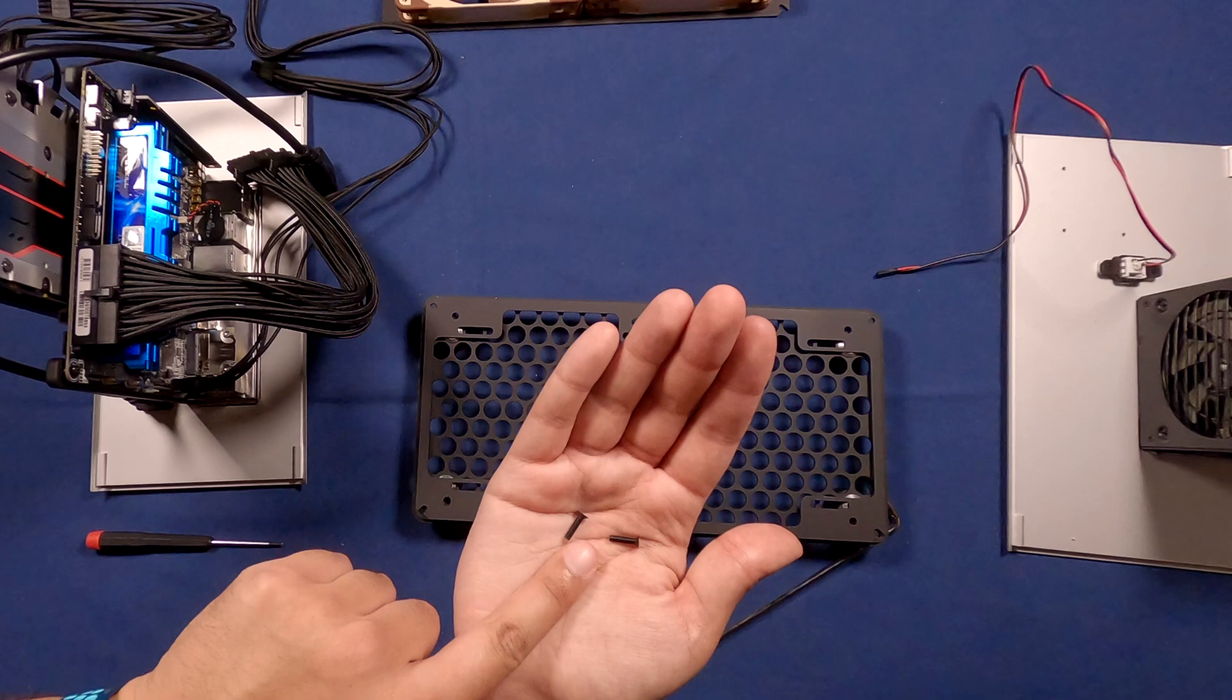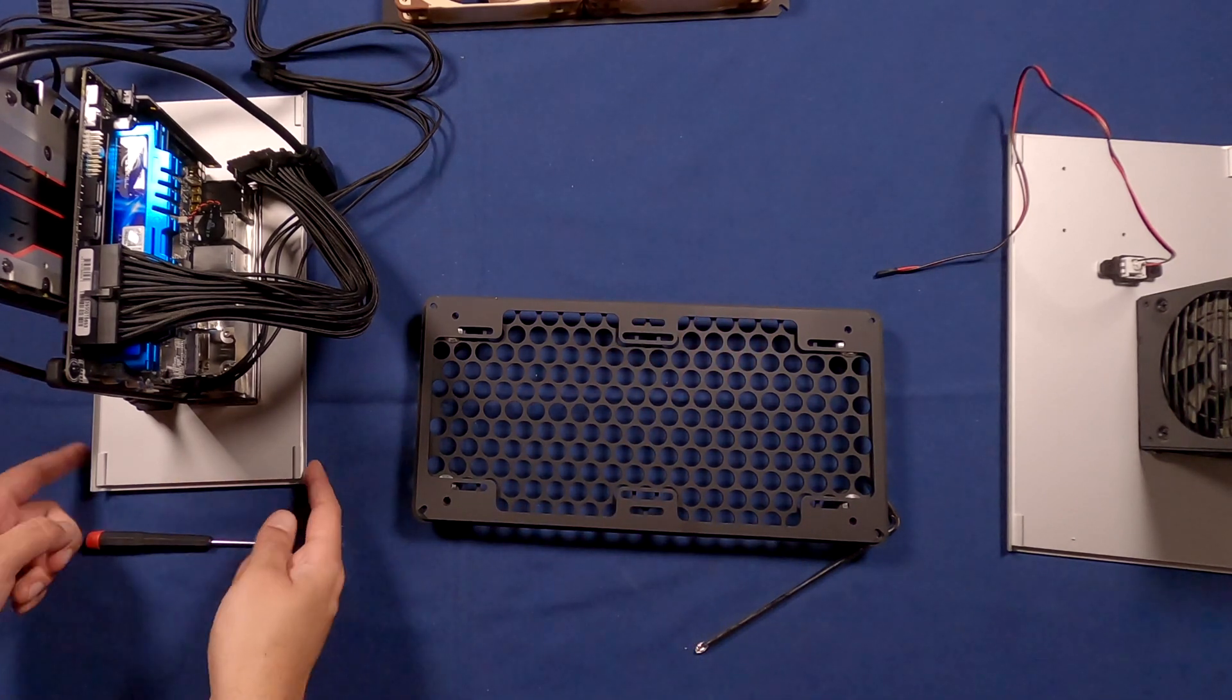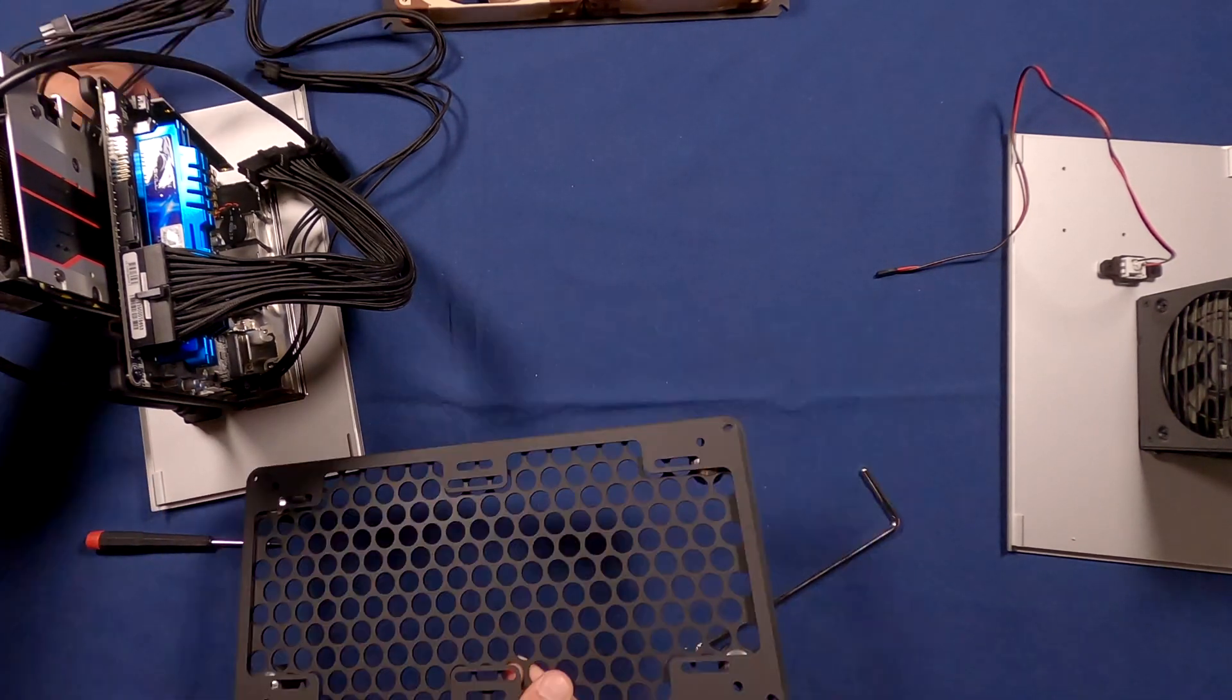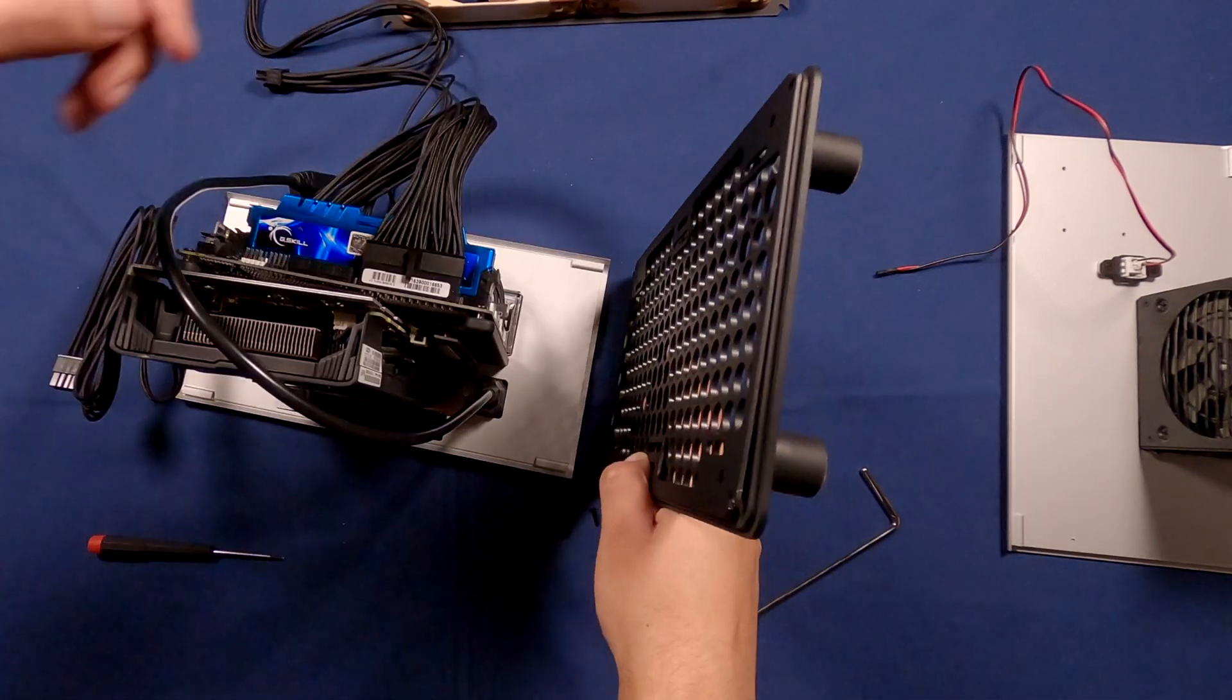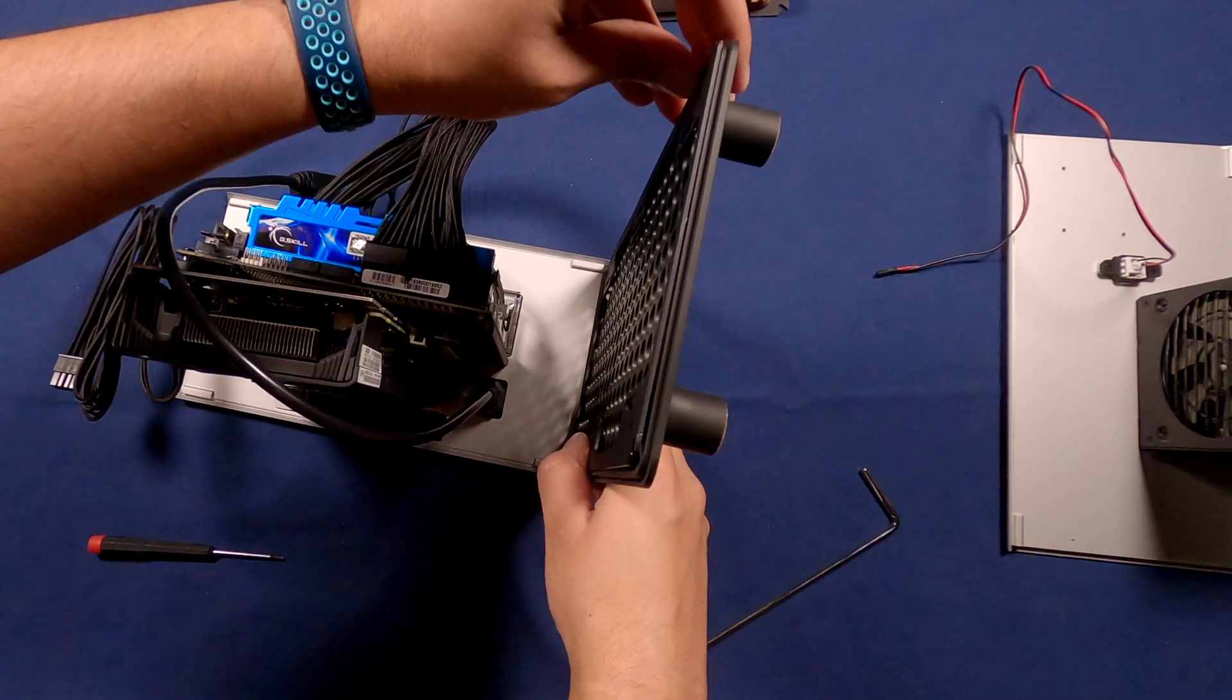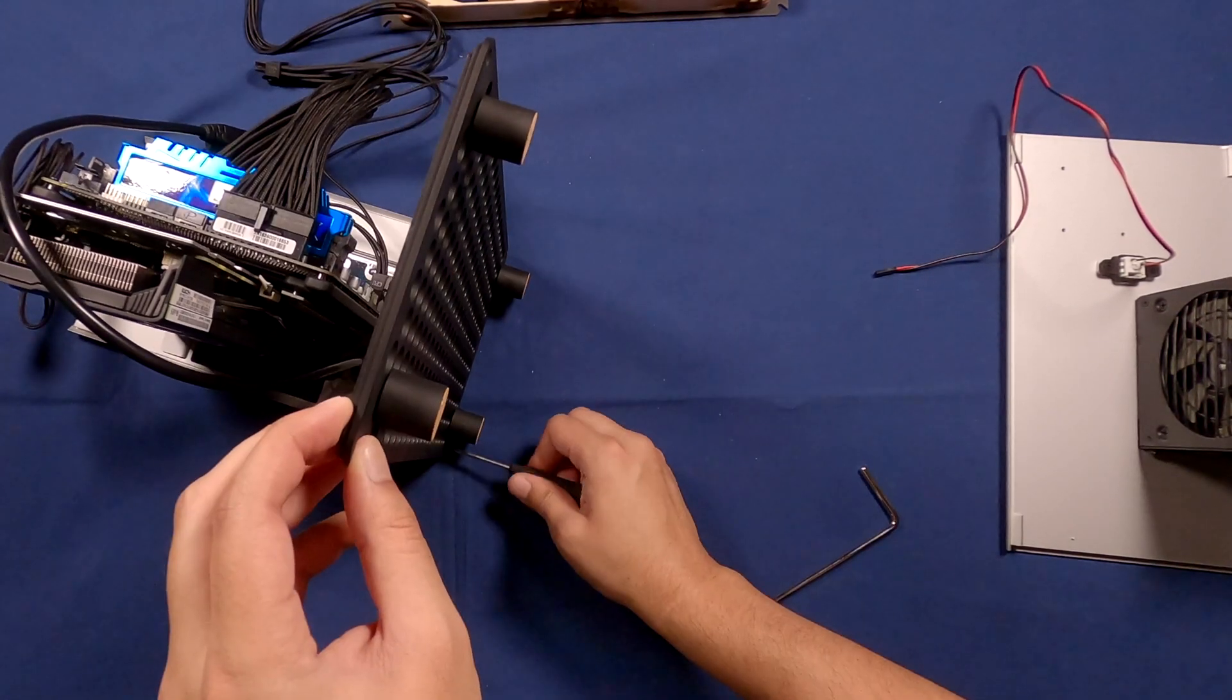Now you're going to grab some screws and attach this to the bottom of the rear panel. Put the fan plate on the end plate and you're going to put it on the rear panel like that and screw it into place. This is going to hold it.